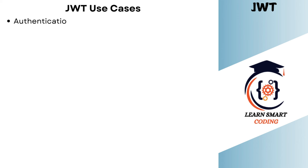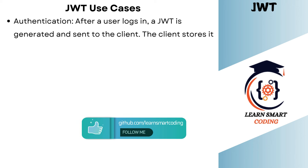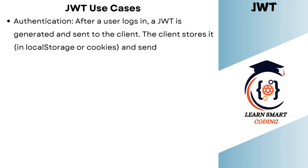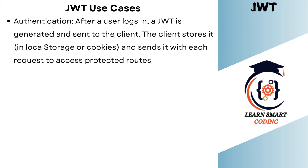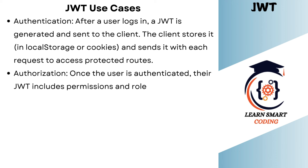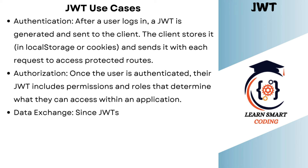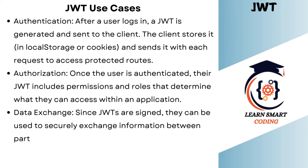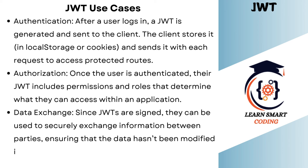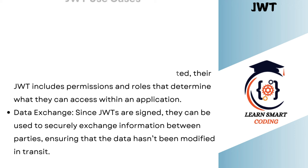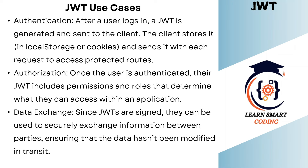JWT use cases: The first is authentication. After a user logs in, a JWT is generated and sent to the client, which stores it in local storage or cookies and sends it with each request to access protected routes. Second is authorization — once authenticated, the JWT includes permissions and roles that determine what the user can access within the application. Admin users get certain privileges, regular users get others, and these are encoded in the JWT body, decoded and verified on each request. The last use case is data exchange — since JWTs are signed, they can securely exchange information between client and server, ensuring data hasn't been modified in transit.